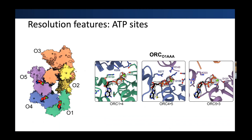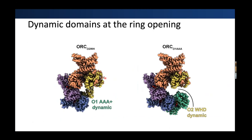I want to go into the dynamic aspects and different conformations, as I think they're more interesting. To start, I want to point out the opening of the partial ring — there were two conformations. One where the ORC1 AAA+ domain was dynamic and unresolved — present but not resolved by cryo-EM. And one where the ORC2 wing helix domain is dynamic and unresolved. These two domains seem to repel each other: if one was in a locked position, the other domain seemed to be dynamic.